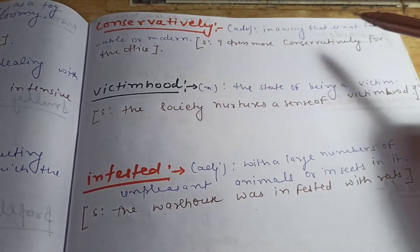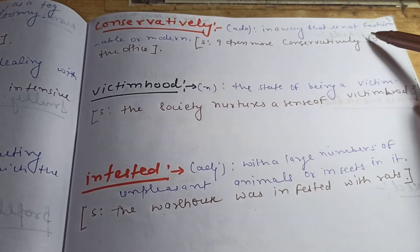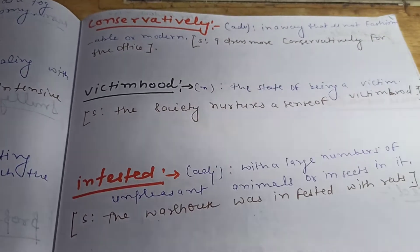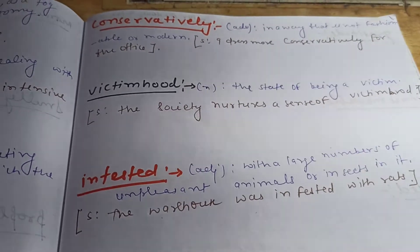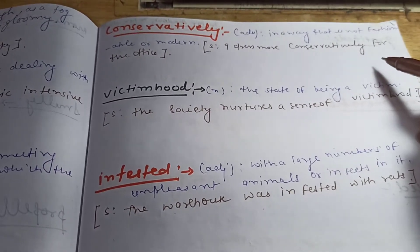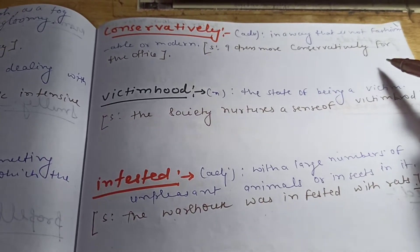This is an adverb, and the meaning of this word is in a way that is not fashionable or modern. Kuch aisa jo aaj ke samay ke hesaap se na ho, bohut purani jamaane ka ho, uske liye we can use this word. And the sentence of this word is: I dress more conservatively for the office.